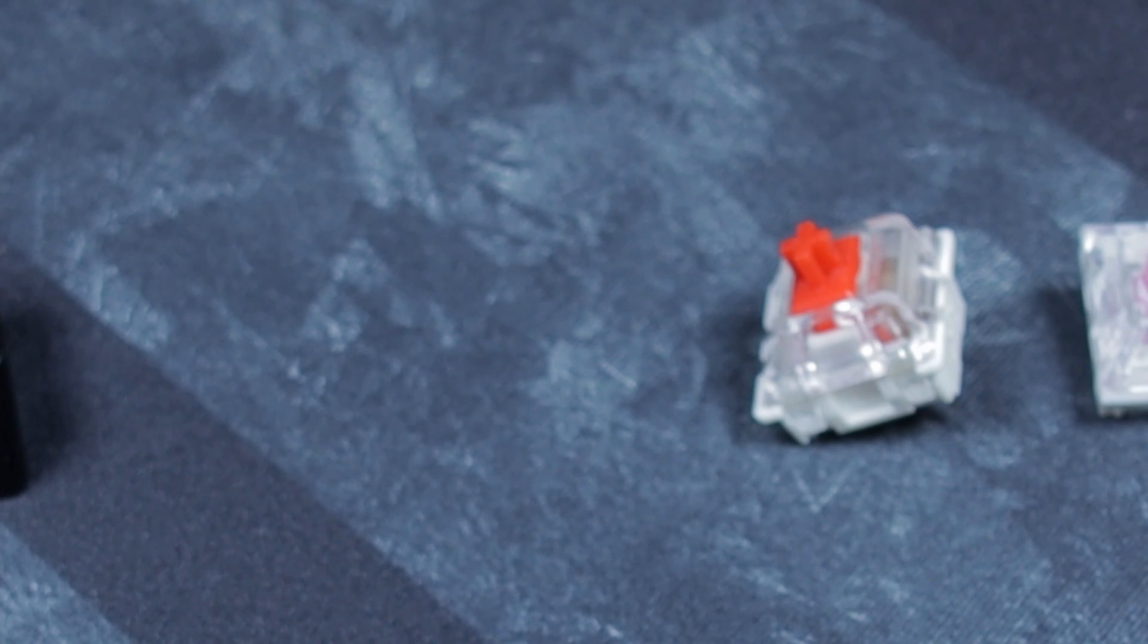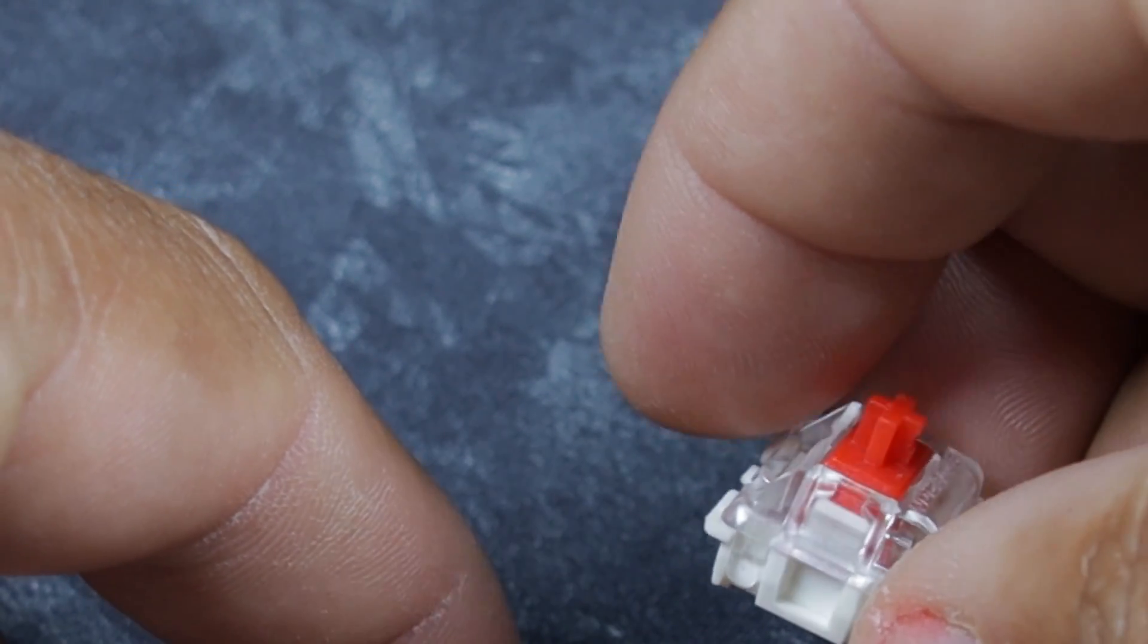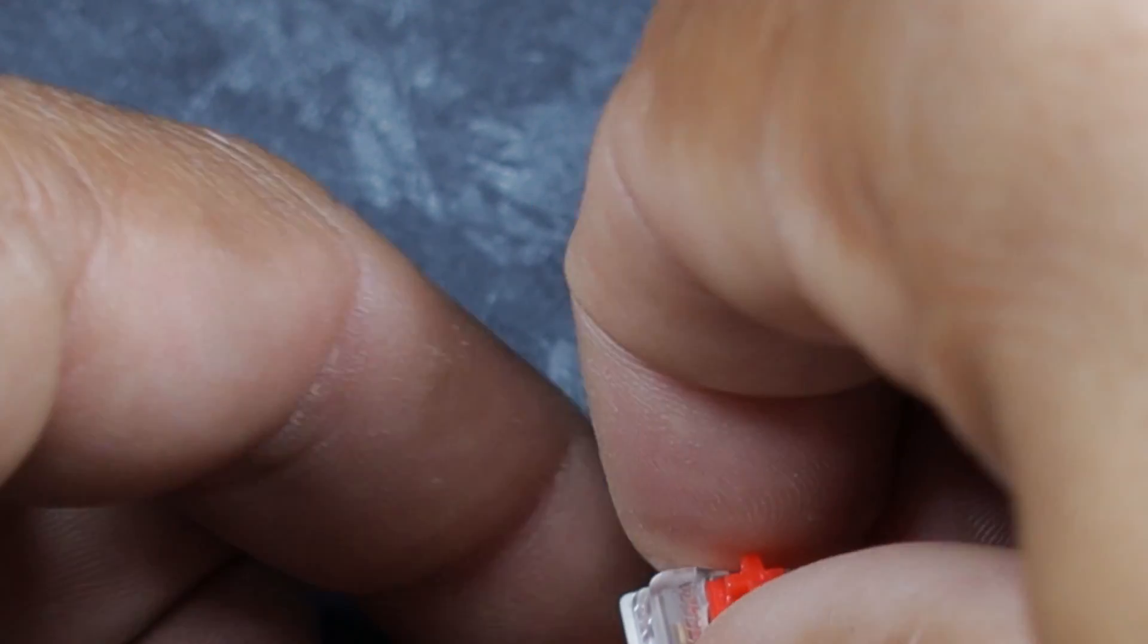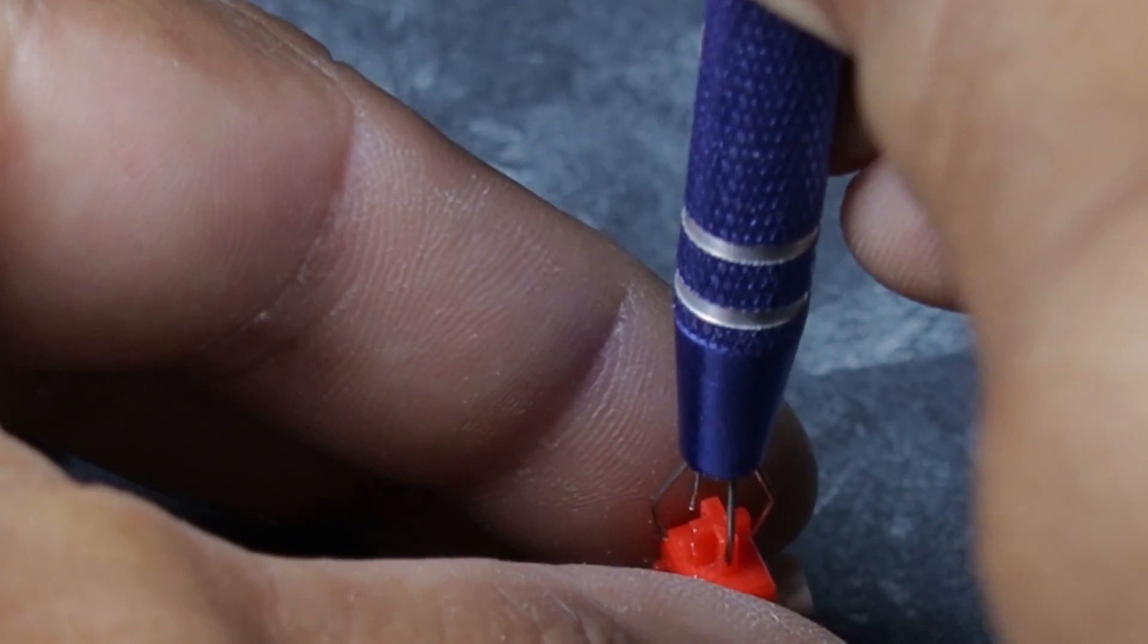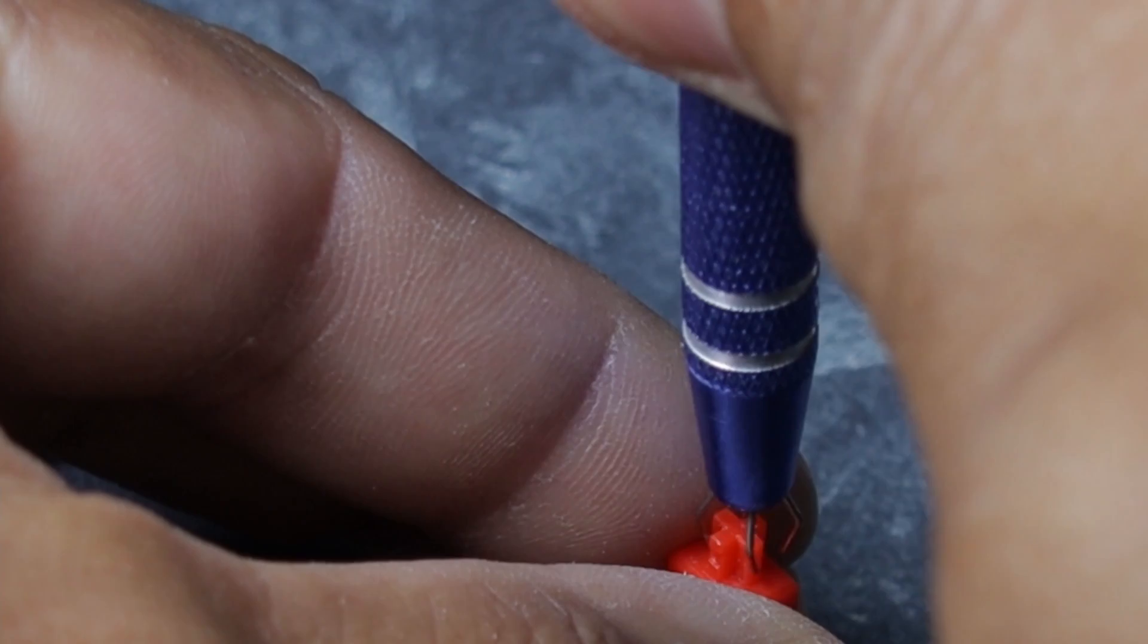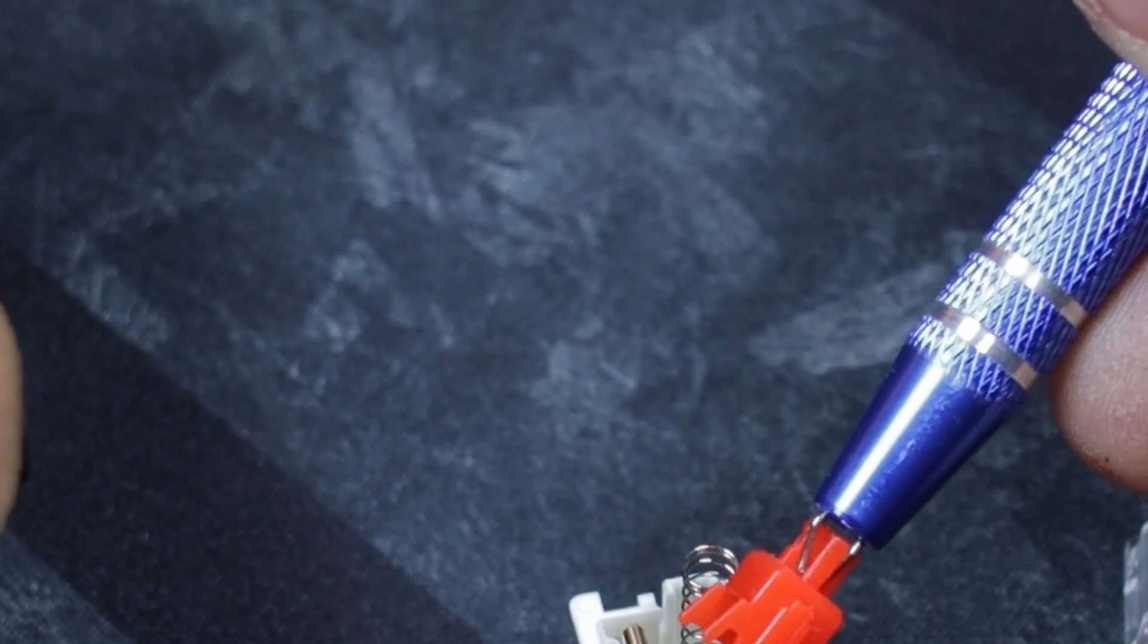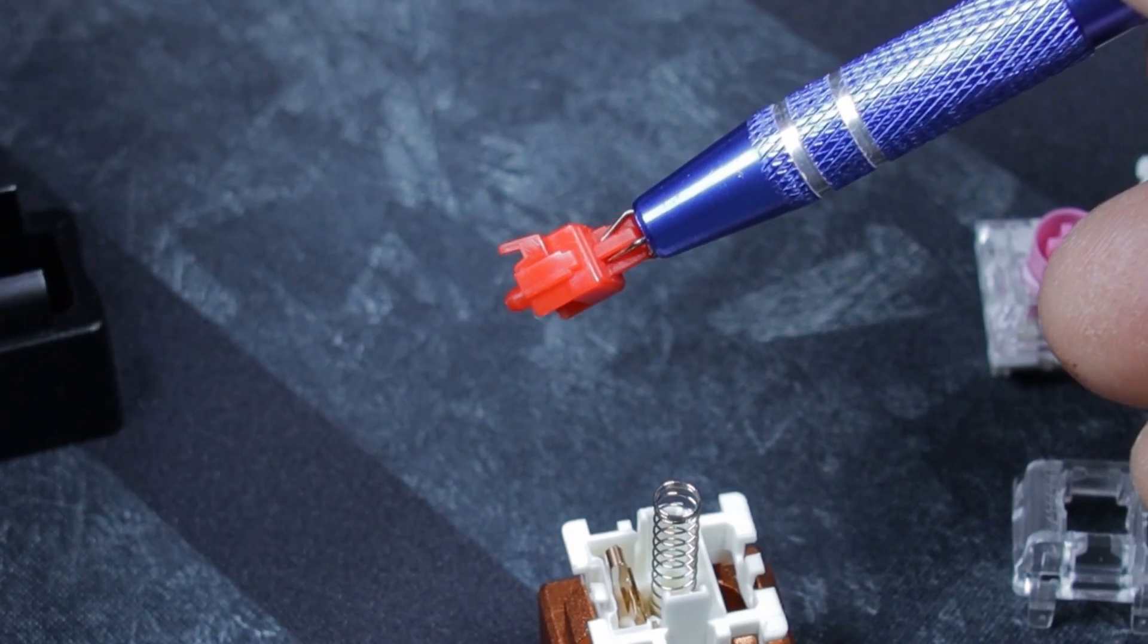Let's get after it. Mechanical switches 101, we'll start with the ever popular Cherry red. This one's actually a Gateron red but they're the same. Throw this guy on the opener, here you go. So you can see the little legs, they're flat straight across, that's what makes it a linear.